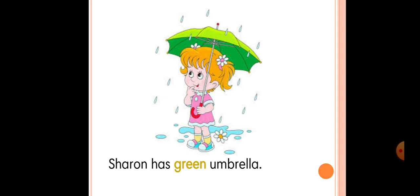Charon has a green umbrella. The highlighted word is 'green.' Charon has an umbrella — now we know about the color too. So 'green' refers to color.